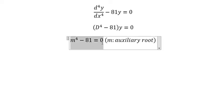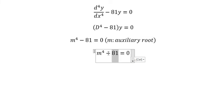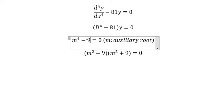We have this equation and we can factor it as m squared minus 9 times m squared plus 9, because 81 is like 9 squared and m to the power of 4 is like m squared to the power of 2.